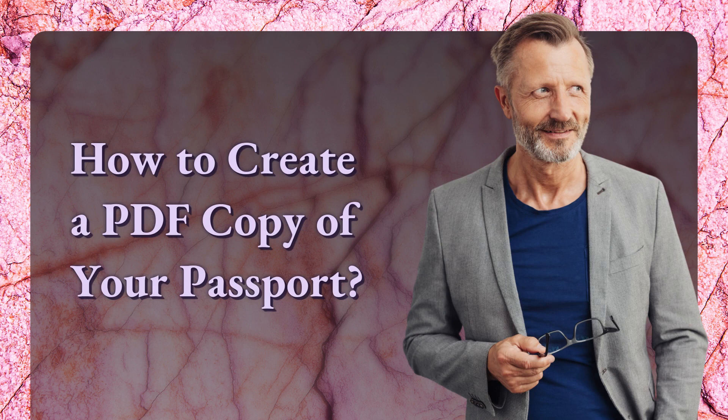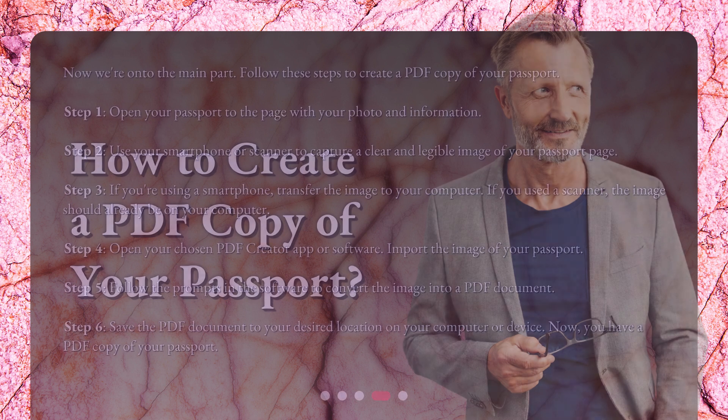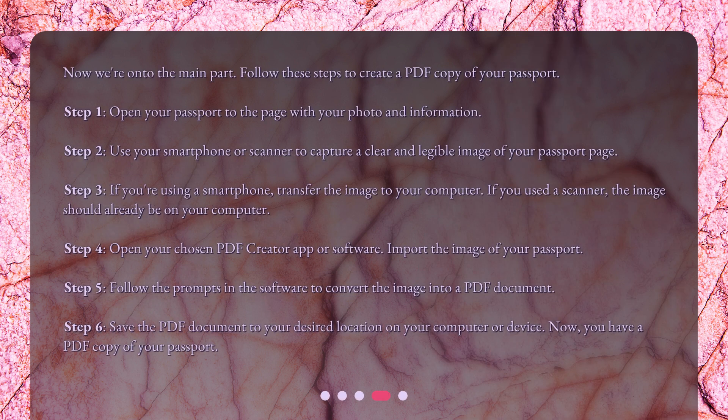How to create a PDF copy of your passport. Now we're on to the main part. Follow these steps: Step 1 — open your passport to the page with your photo and information. Step 2 — use your smartphone or scanner to capture a clear and legible image of your passport page. Step 3 — if you're using a smartphone, transfer the image to your computer. If you used a scanner, the image should already be on your computer.